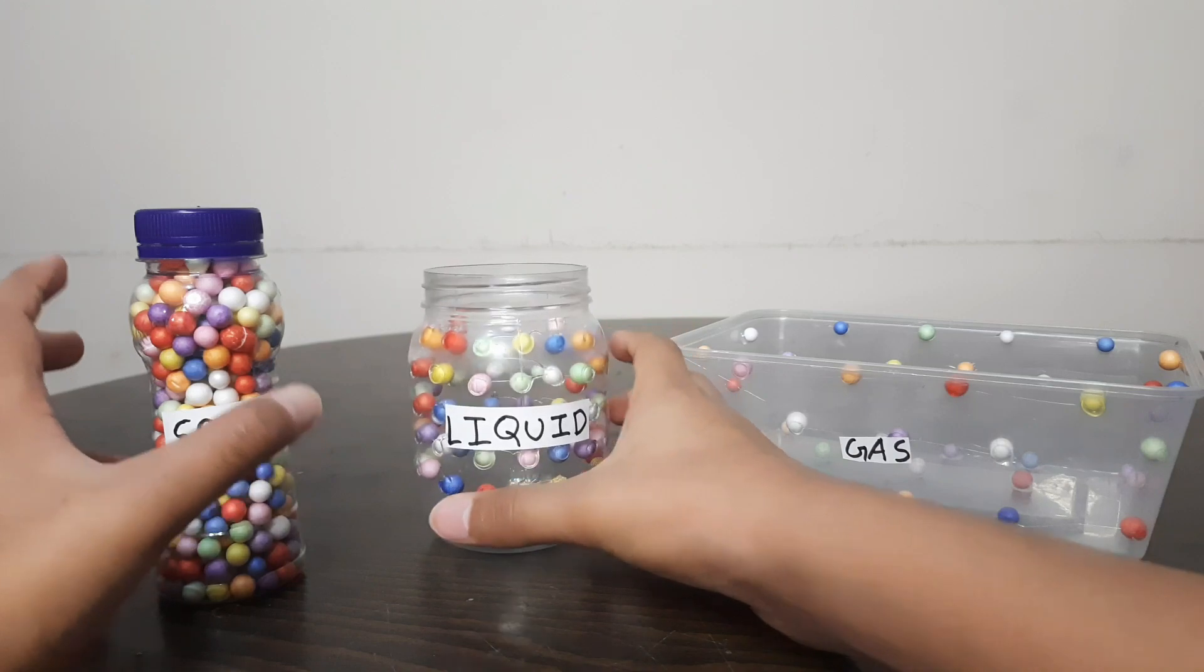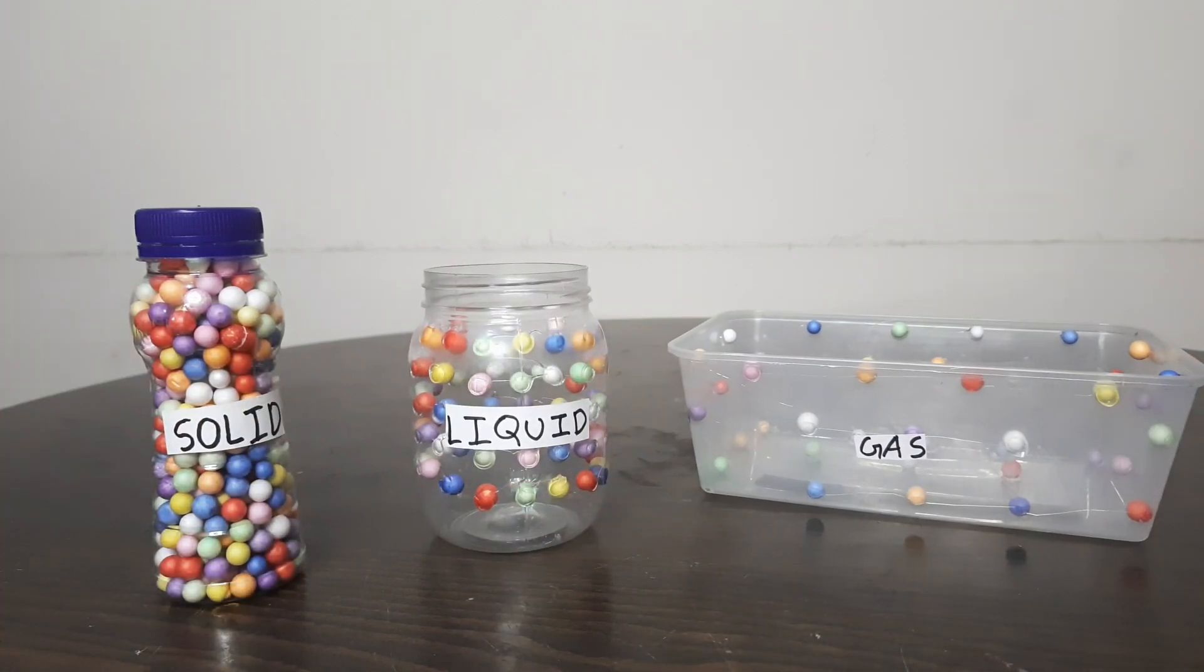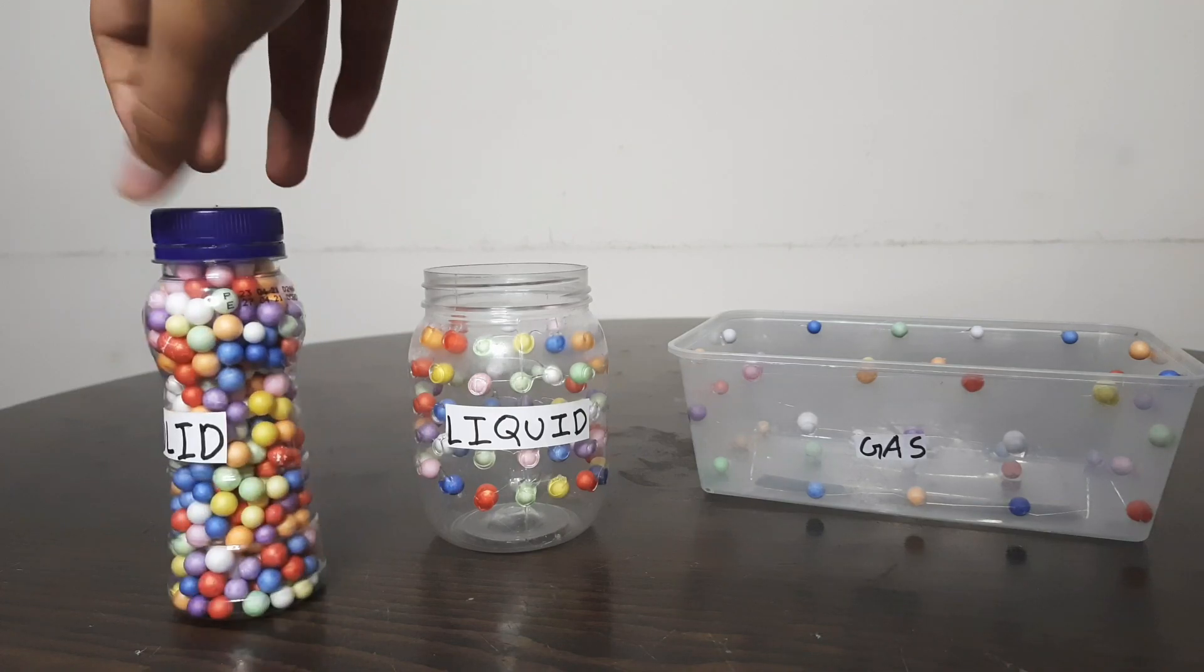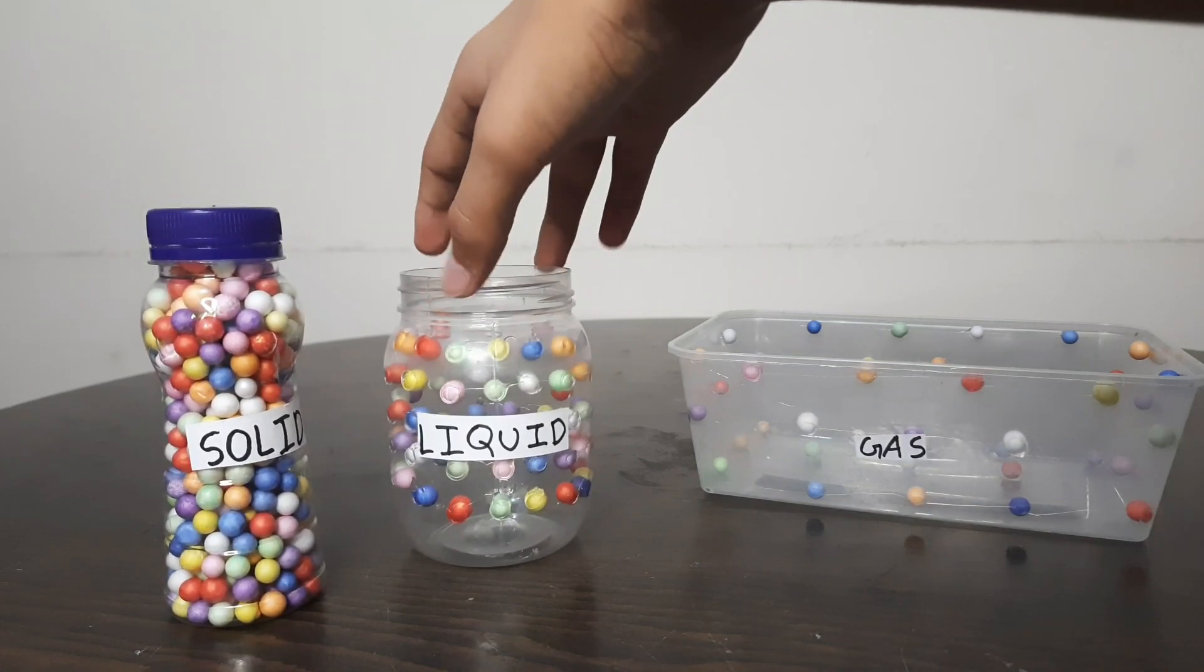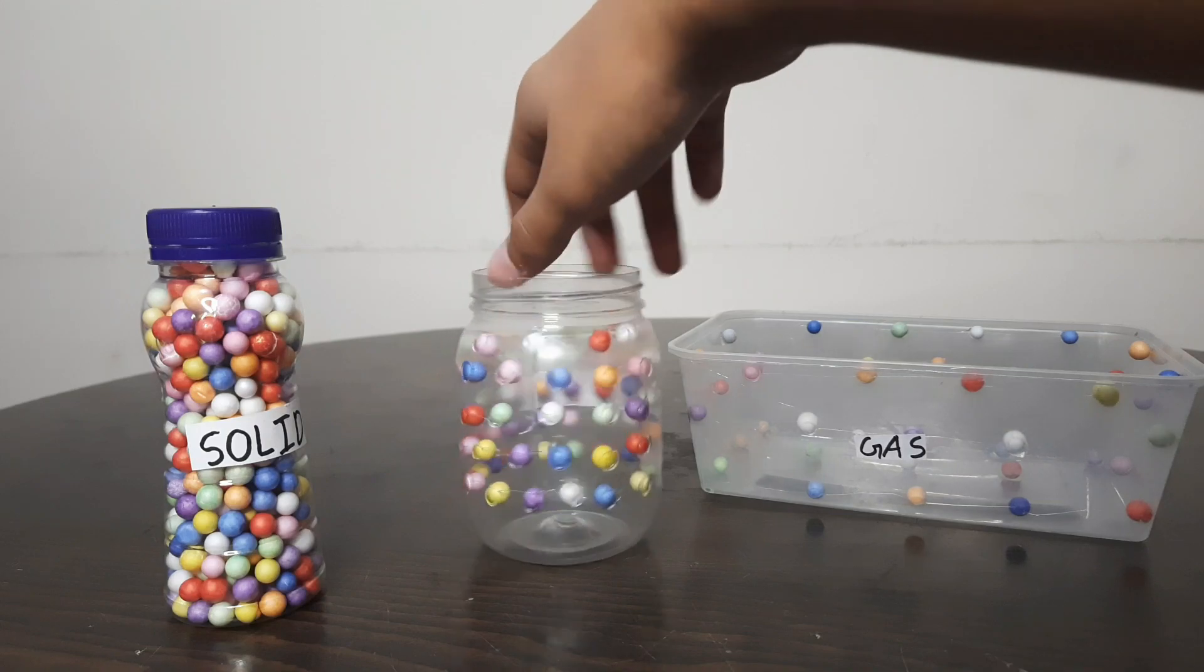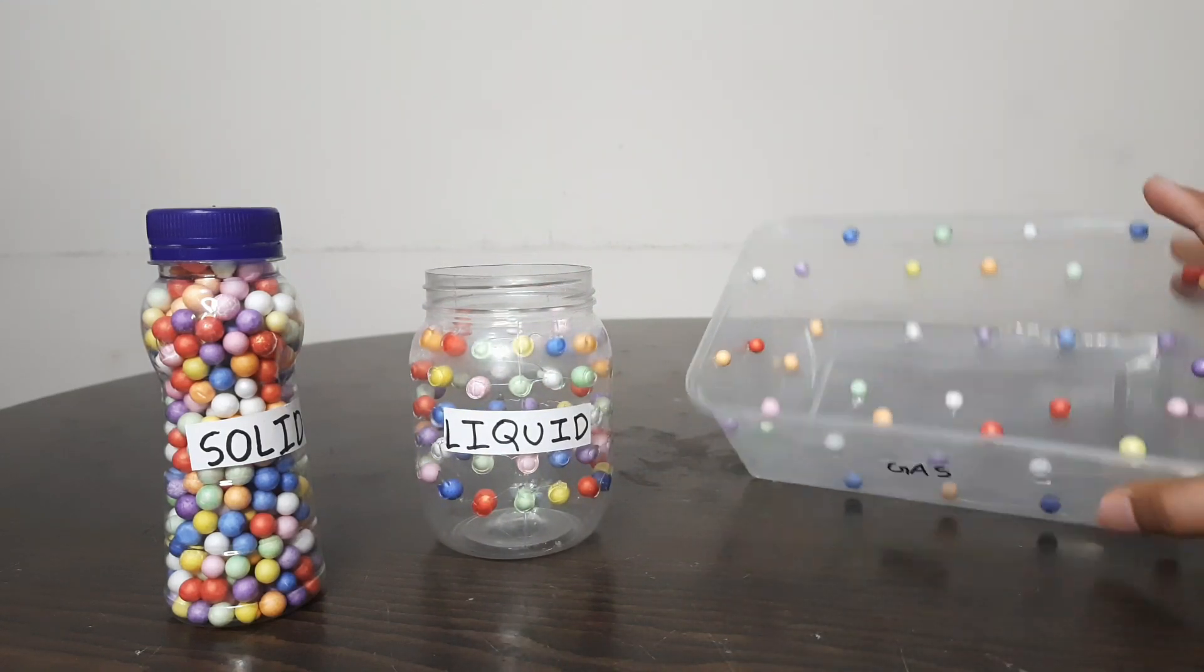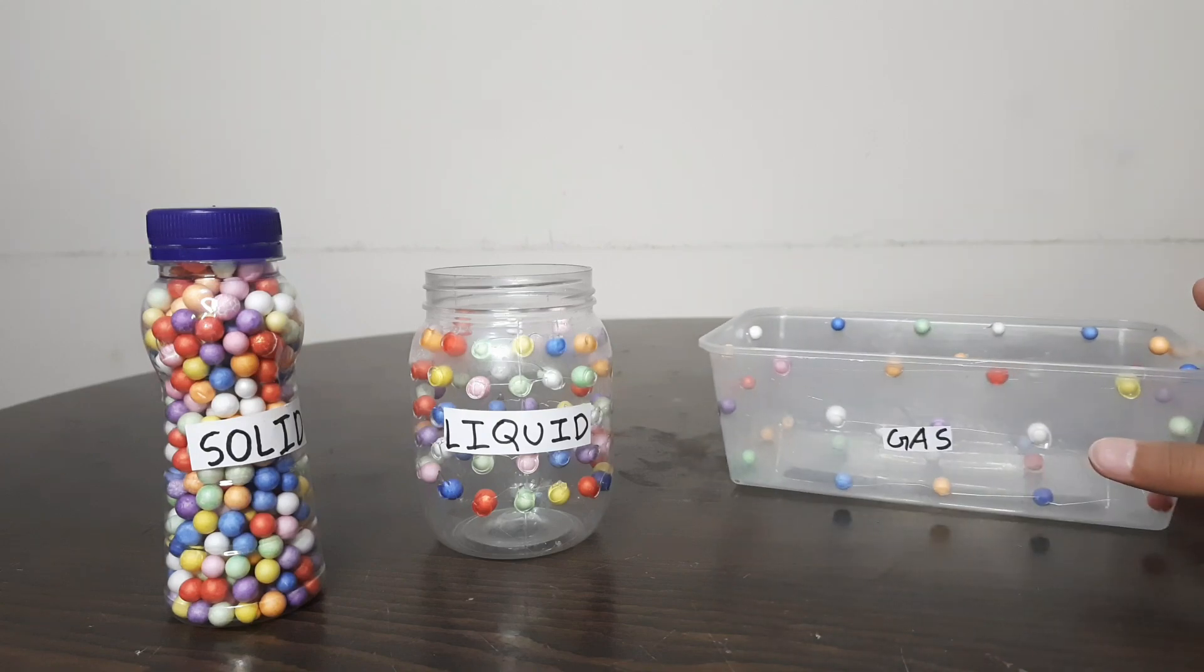Solid, liquid and gas. In solid, the molecules are tightly packed. In liquid, the molecules are a little bit less tightly packed. And in gas, the molecules are very far from each other.